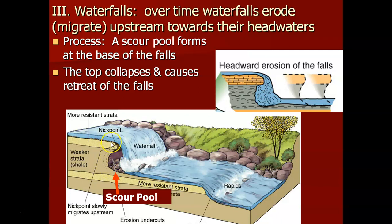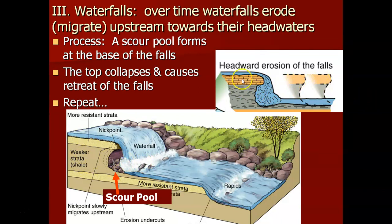Once the base is undermined, the top starts to collapse in, and you usually see big boulders in the scour pool. Through time, you wind up with retreat upstream of that waterfall. This is called headward erosion — eroding the falls toward the headwaters, upstream, by the process of undermining and then the top collapsing.